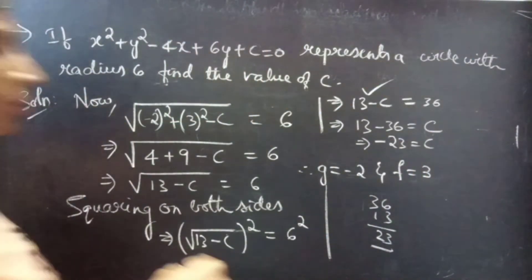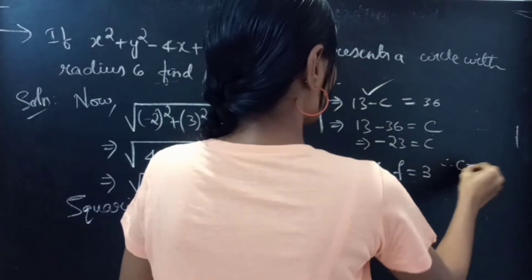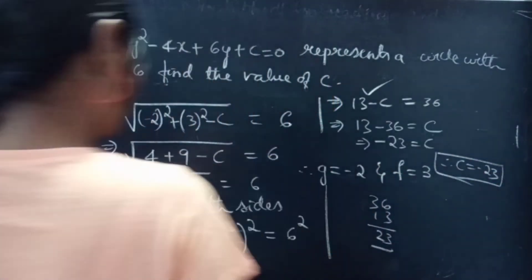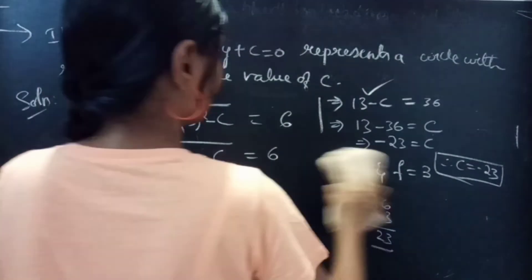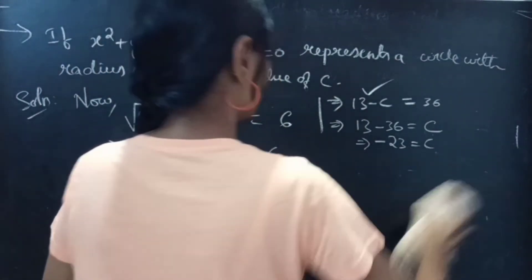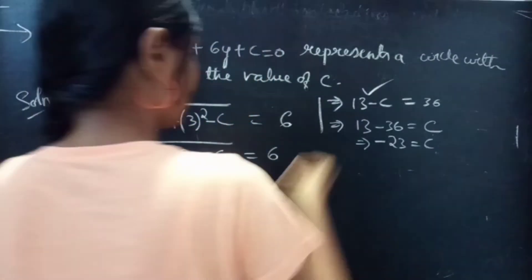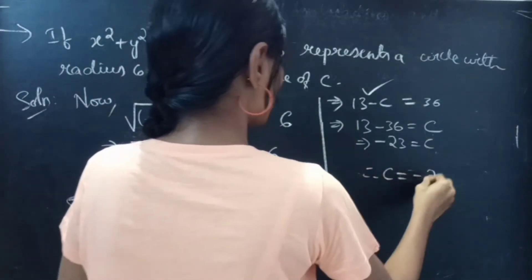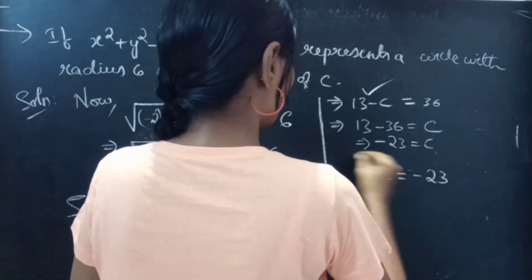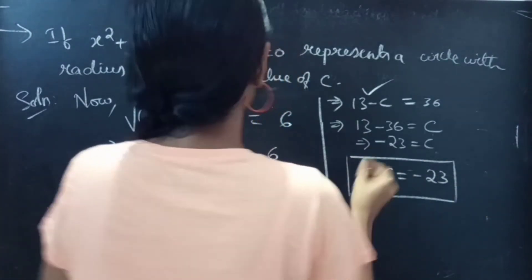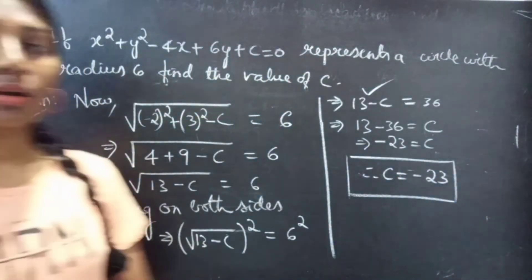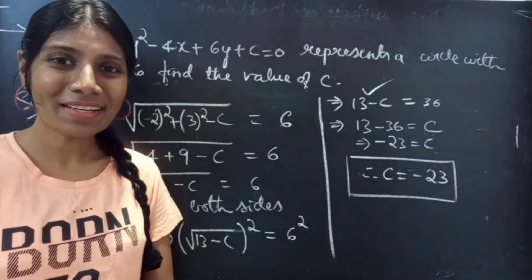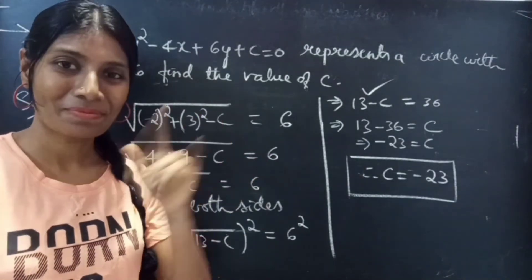Therefore, c = -23. This concludes the problem. So we have seen a problem from circles in this video. Hope you understand. We'll see you in the next video — until then, bye-bye.